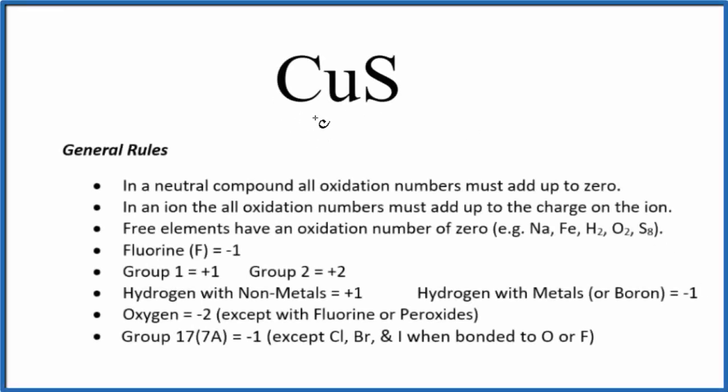In this video we'll find the oxidation number for each element in CuS, copper 2 sulfide. The first thing we notice is there's no negative or positive written after it, so it is a neutral compound. Because of that, all the oxidation numbers are going to add up to zero.